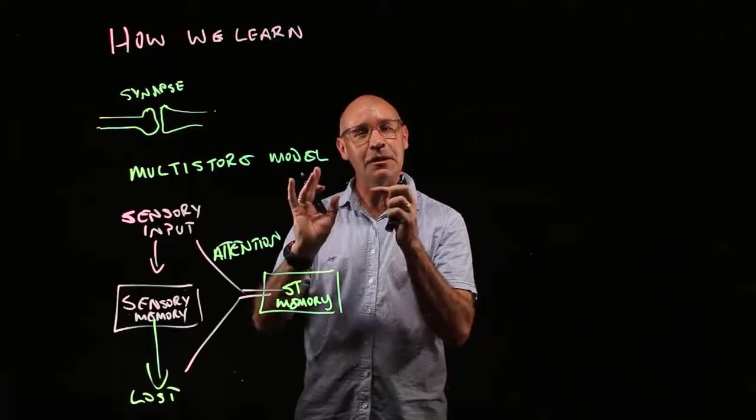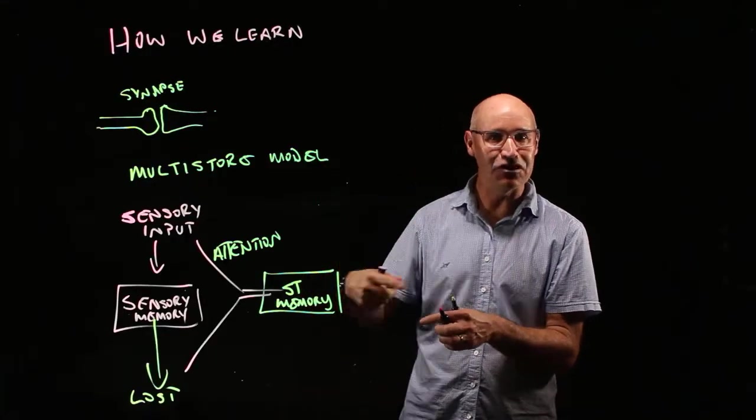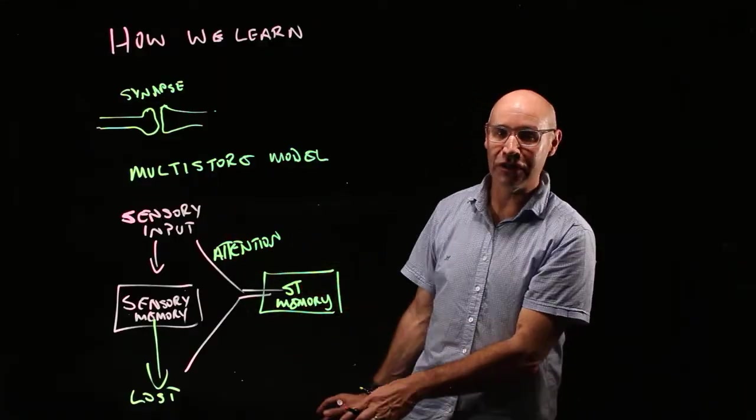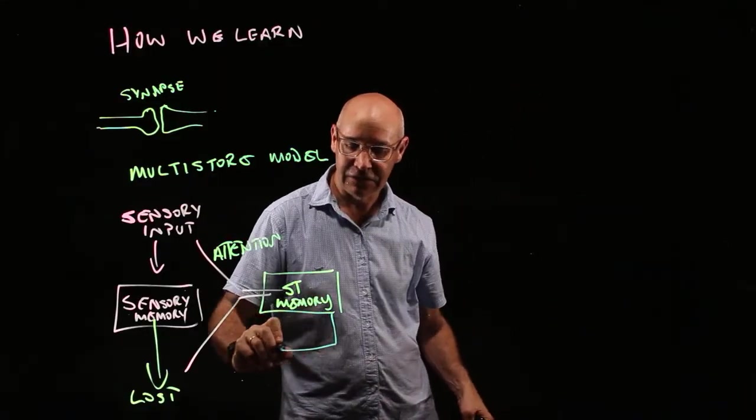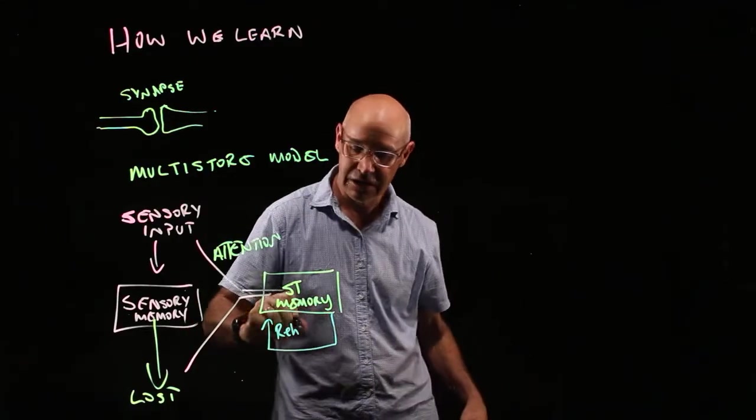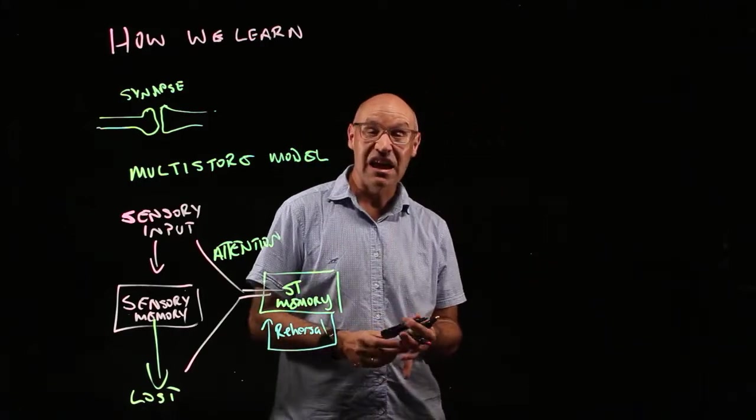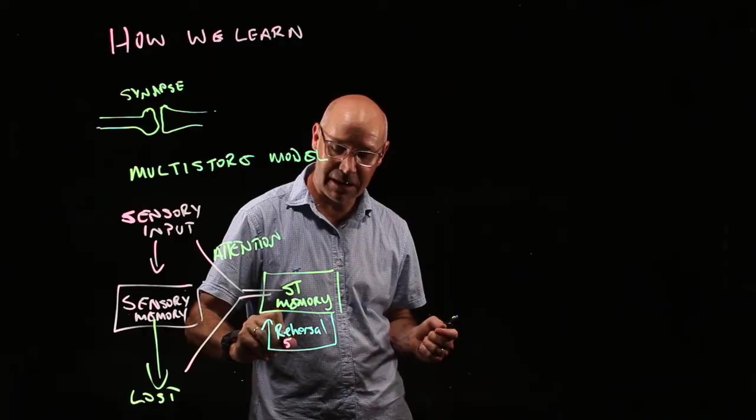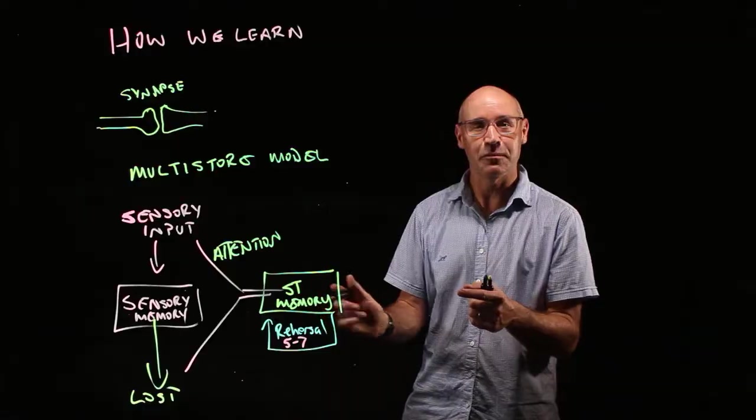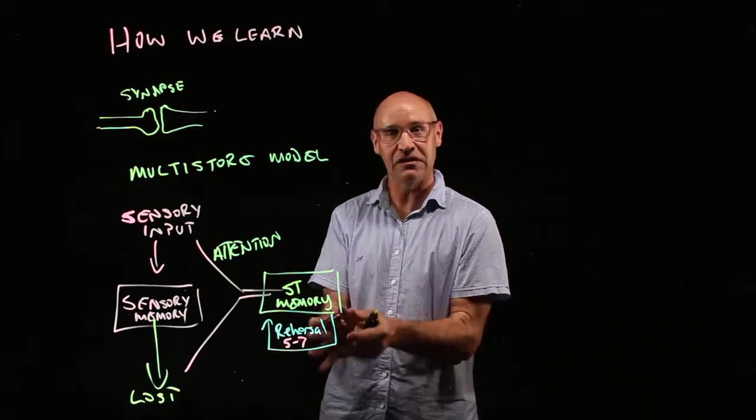So to keep something in your short-term memory like a phone number or maybe somebody's name that you've just met, how do you keep that in your short-term memory before it fading off in 30 seconds time is rehearsal. You need to continually rehearse it in your brain. Rehearsal. Rehearsal. Keep on repeating it in your head. How much can you keep in short-term memory? Maybe five to seven digits or chunks and that's about it. Whilst you continue to rehearse it then it continues to stay in your memory but you have to be attending to it.